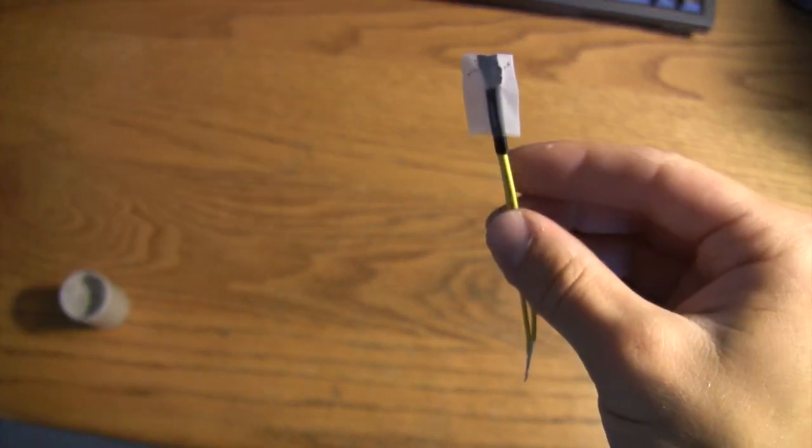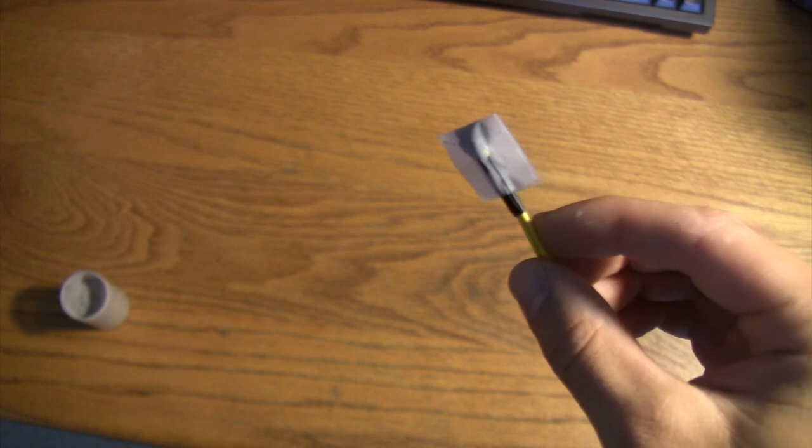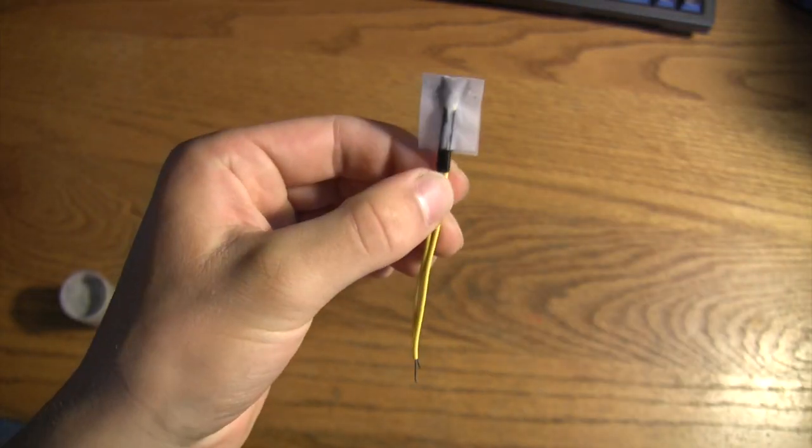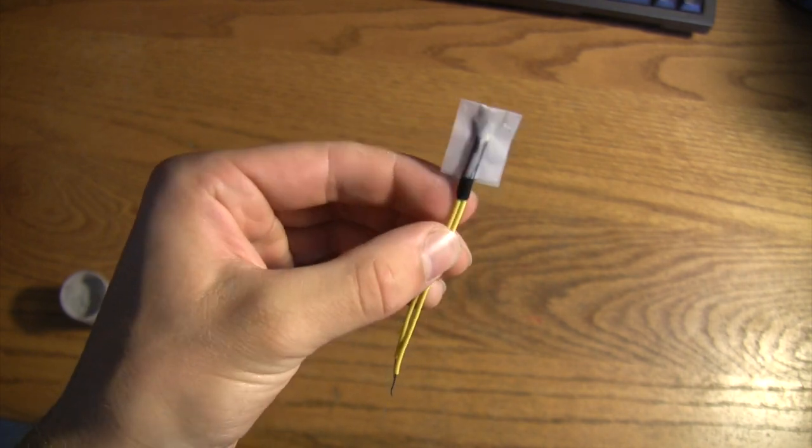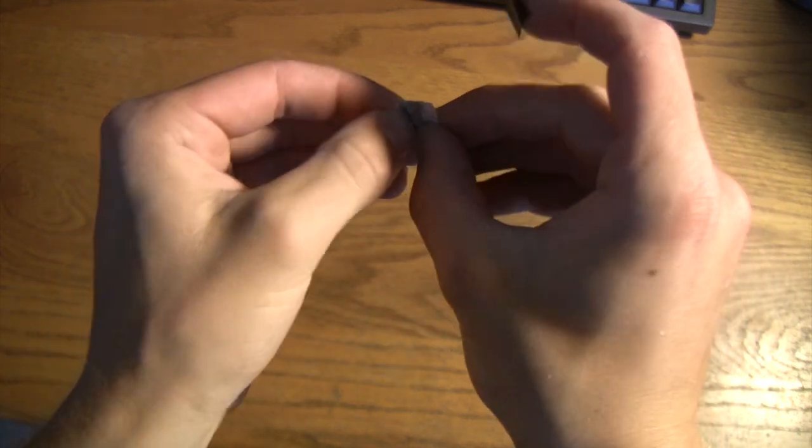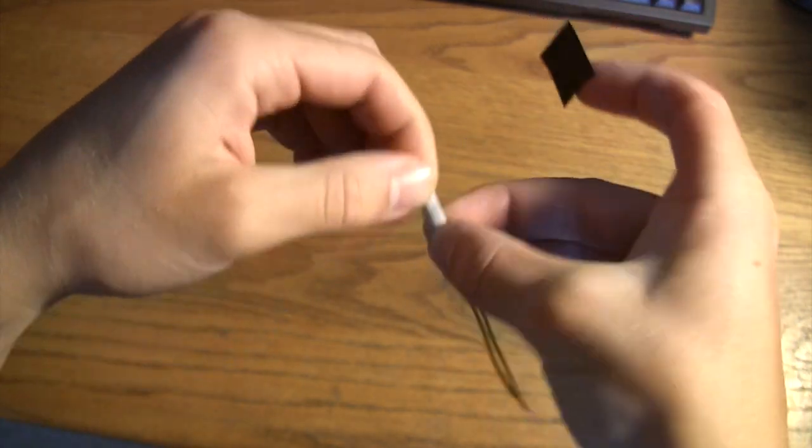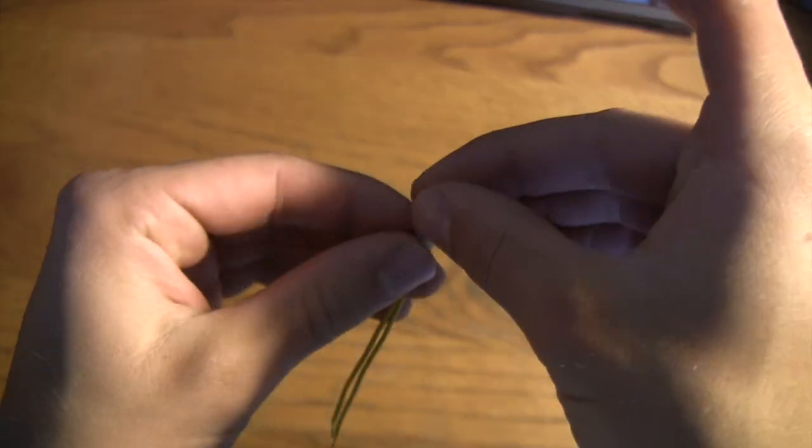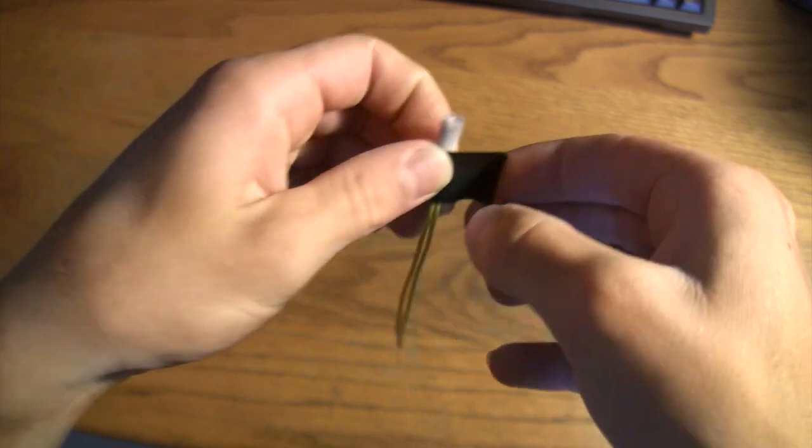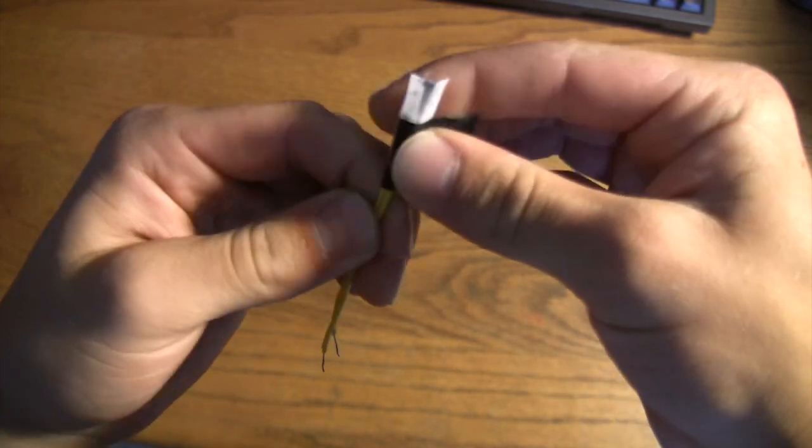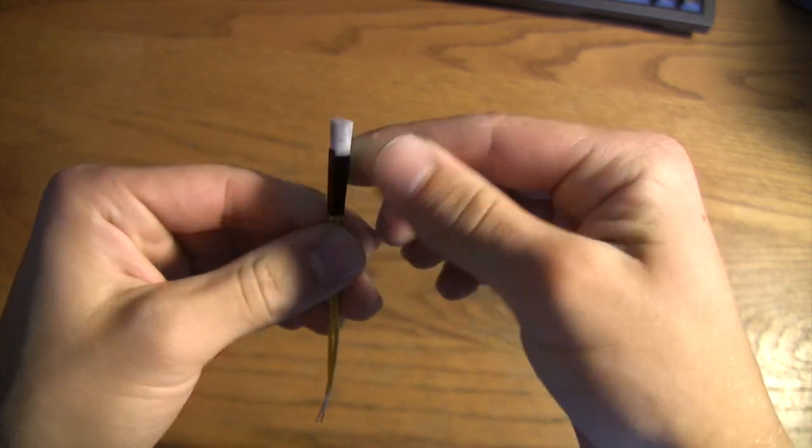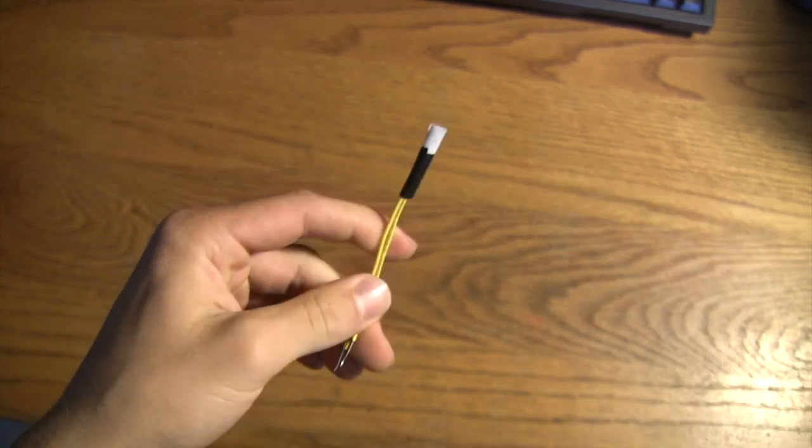And right now you could be done. This could be your igniter, and you can use this for rockets or fireworks or whatever. But I like to take it a little bit further. So now I will use some electrical tape, and I'm just going to wrap the tape around it so it looks nice and neat. And I'll get this bottom half of the scotch tape wrapped up.